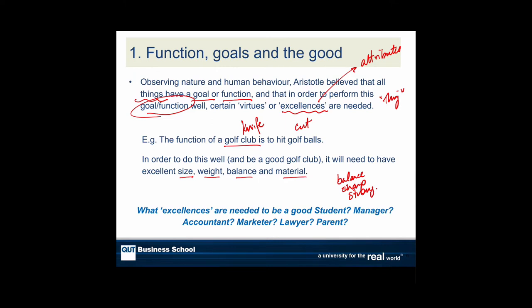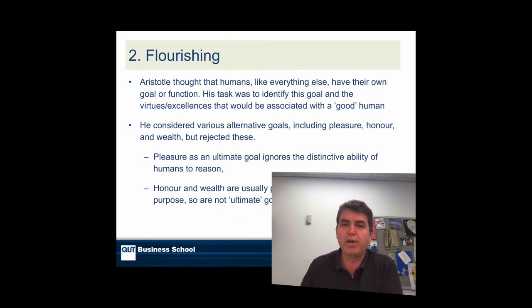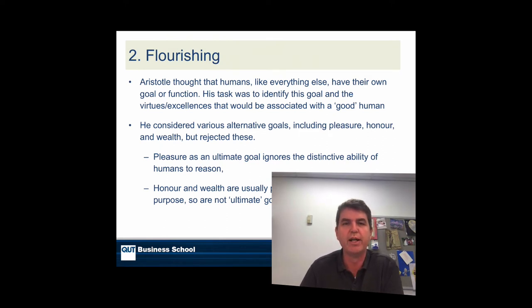Now we start turning this into ethics and humans, and we start thinking: what are the excellences, what are the attributes of a good student, a good manager, a good accountant? We can put in anything here, but we're starting to be specific — a bit like golf club or knife — only we're thinking about a role in society. While we can apply this concept to specific roles in society, which is very useful if we want to take a virtue ethics approach, we can also apply it generally, because Aristotle thought that humans, like other things in our natural world, have this function.